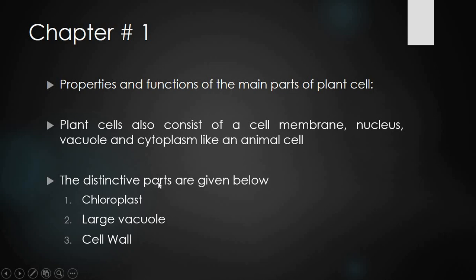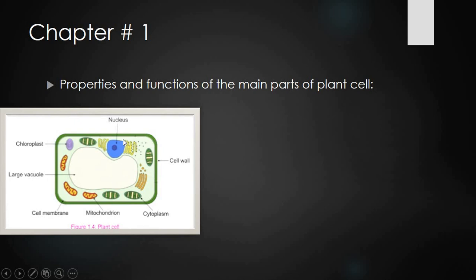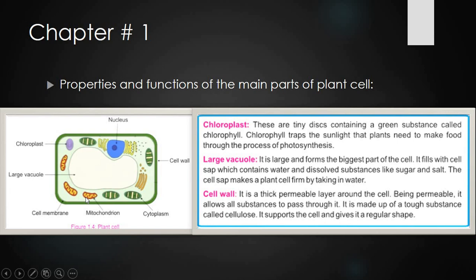Let us now read about these three distinctive parts. Here is the structure of a plant cell. You can see different things in it — the large vacuole, the chloroplast, and the cell wall. The remaining parts are mostly the same as in animal cells.